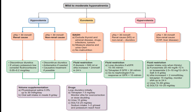Drug options for euvolemic SIADH: start with loop diuretics, consider tolvaptan 7.5 milligrams per day with monitoring for overcorrection, urea 15 grams per day, and SGLT2 inhibitors 25 milligrams per day. Sodium intake of 1 to 2 grams per meal with potassium-rich food.